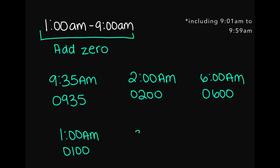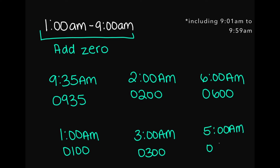Let's try 3 a.m. — military time is going to be 0300. And 5 a.m. — military time is going to be 0500. So any time between 1 a.m. to 9 a.m., all you're going to do is add a 0 in front of the hour number.